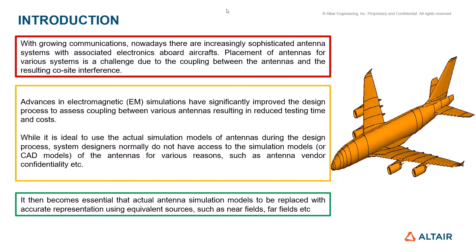It is ideal to use actual simulation models of antennas during the design process. However, system designers normally don't have access to the simulation models of these antennas. They typically receive only radiation patterns from vendors, so they need to find options to work with antenna patterns. It becomes essential that actual antenna simulation models be replaced with equivalent sources, such as near field patterns or far field patterns.